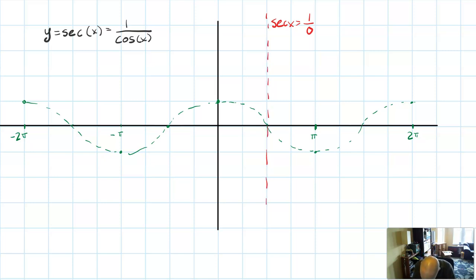Let me do that as a dotted line. There's another zero here. There's another zero here. There's a final zero right here.